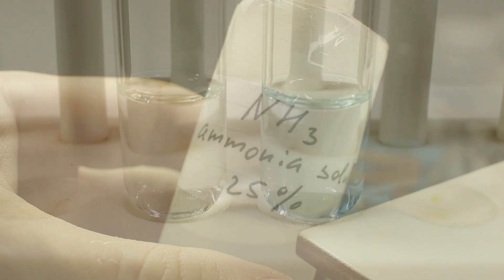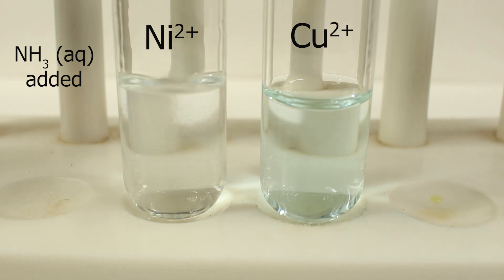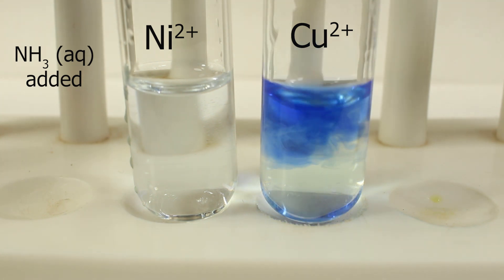Ammonia water solution to nickel. Concentration is low so nothing is clearly seen, but it actually turns a little bit violet. In case of copper II it's much clearer, deep blue solution of complex of copper II and ammonia.